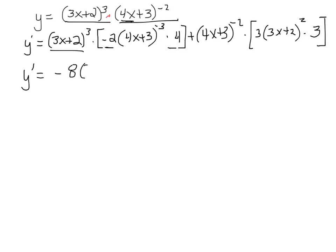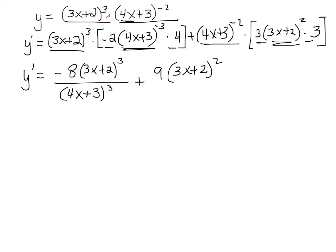to write this piece as a positive exponent. Over here I have 3 times 3, so that gives me 9. This piece, (3x plus 2)², is going to the bottom. Now what I'm going